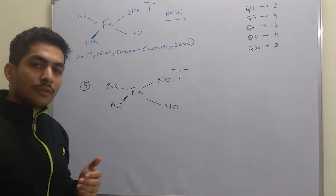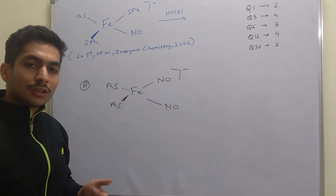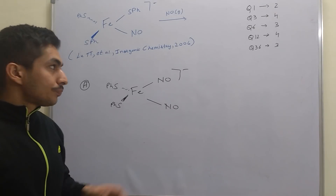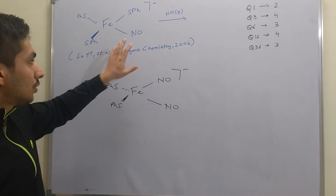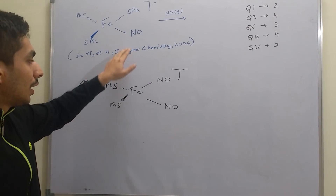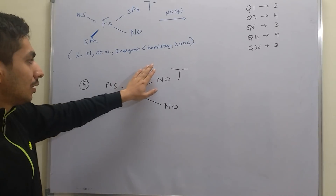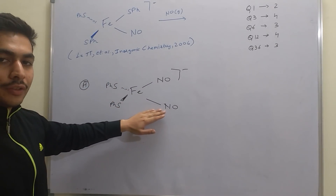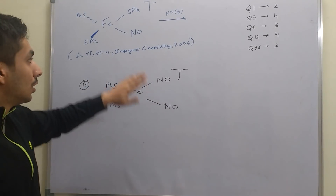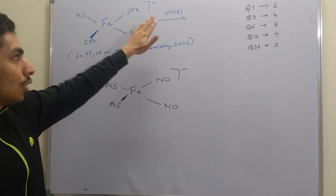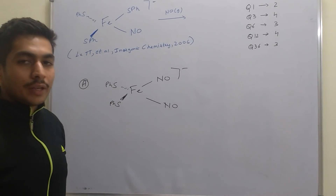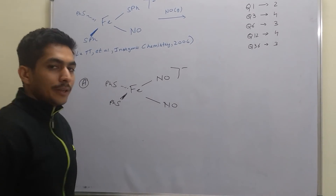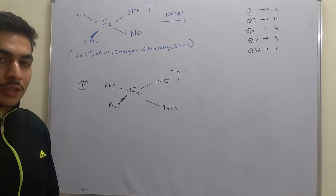You cannot by yourself assume that you are taking excess NO. The reference confirms that for synthesizing such intermediates, this is the starting material and we add one equivalent of NO. So this is the correct answer - option A for question number 4.